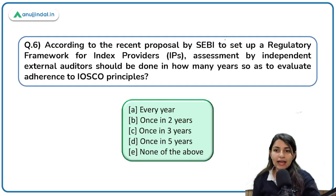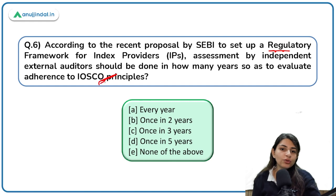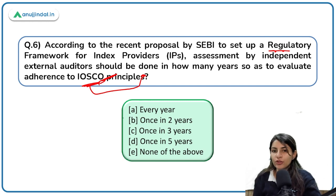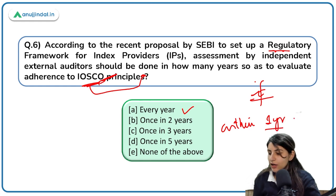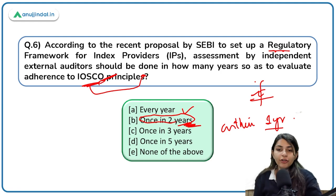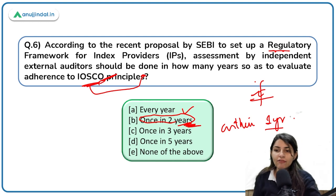Regarding SEBI's regulatory framework for index providers: assessment by independent external auditors to evaluate adherence to IOSCO principles — if someone has received authorization currently, the first assessment must be done within one year. But in normal circumstances, it is done once in two years. So if index providers have received authorization very recently, the first assessment is within one year; otherwise, once in two years.